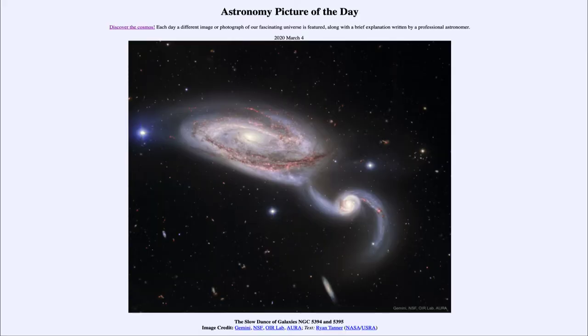Greetings and welcome to introduction to astronomy. One of the things I like to do in each of my introductory astronomy classes is to begin with the astronomy picture of the day from the NASA website, apod.nasa.gov/apod. Today's picture for March 4th, 2020 is titled The Slow Dance of Galaxies NGC 5394 and 5395.